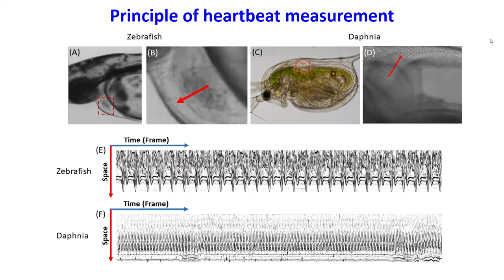This is the principle of heartbeat measurement. We have example A using zebrafish and example C using Daphnia. We choose an area as shown by the arrow and draw a line accordingly. We perform the dynamic reslice in ImageJ, which results in the chemograph as shown in figures E and F. These show the space of the selected area and the time by frame of the video, creating the time-lapse.